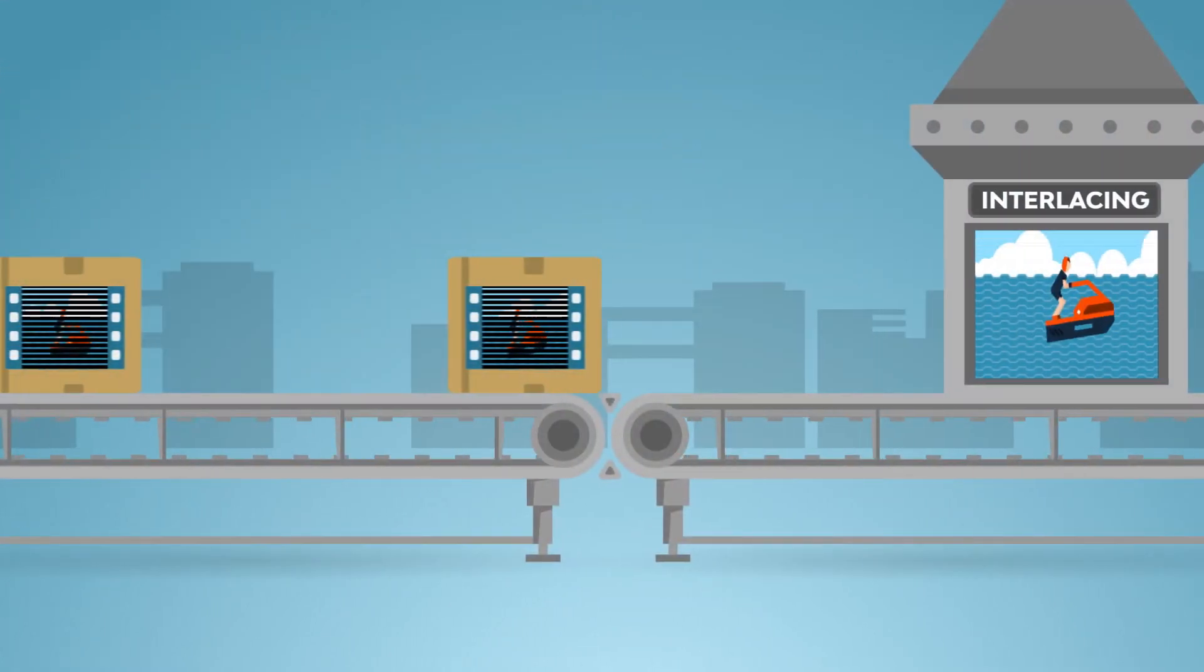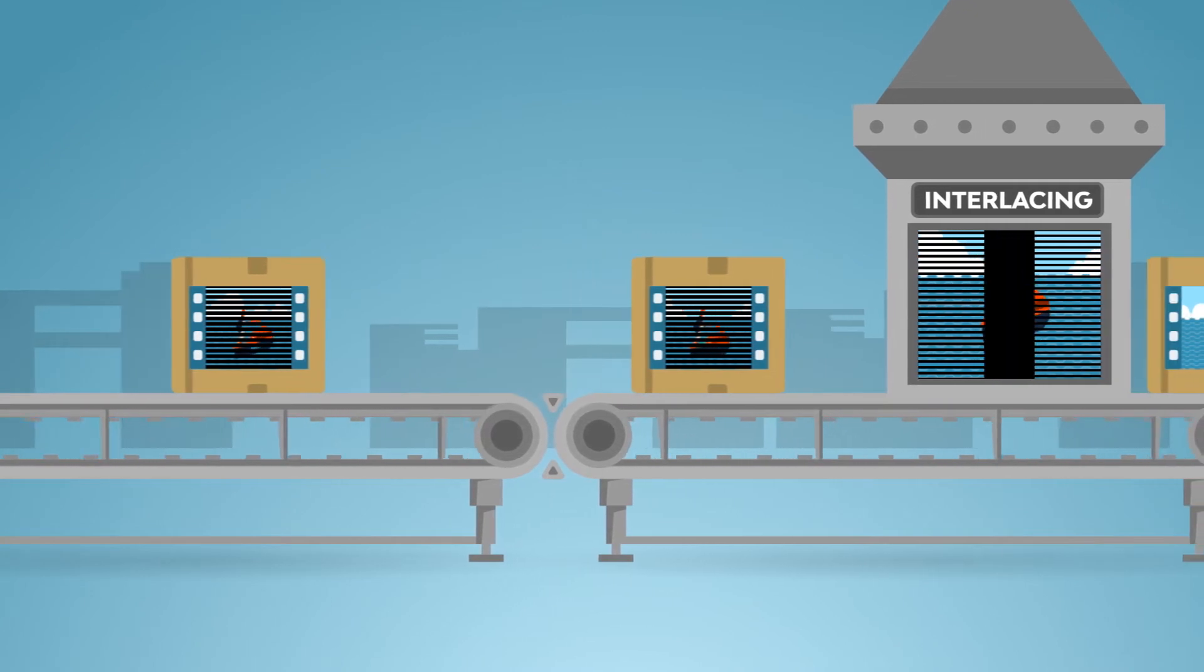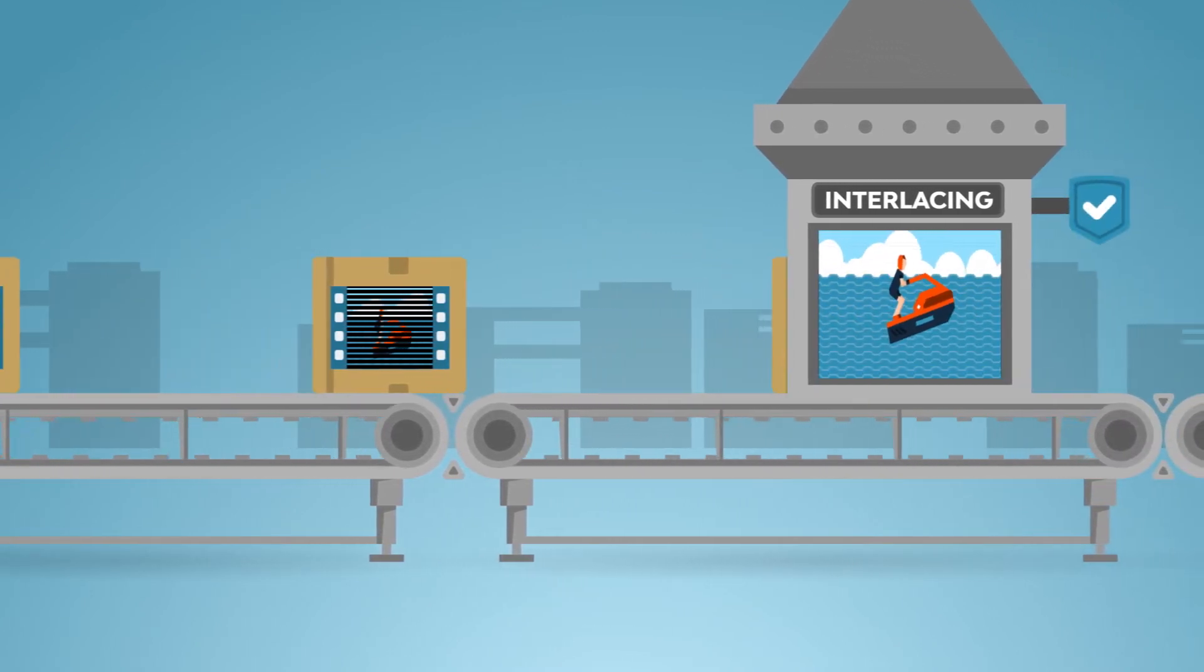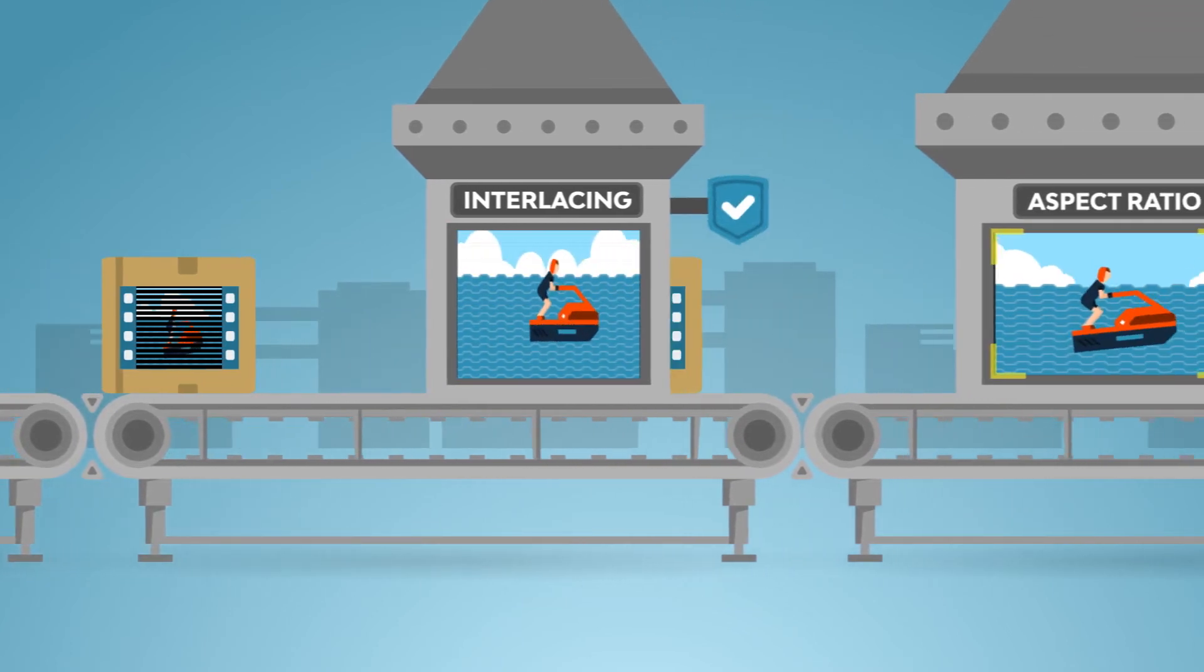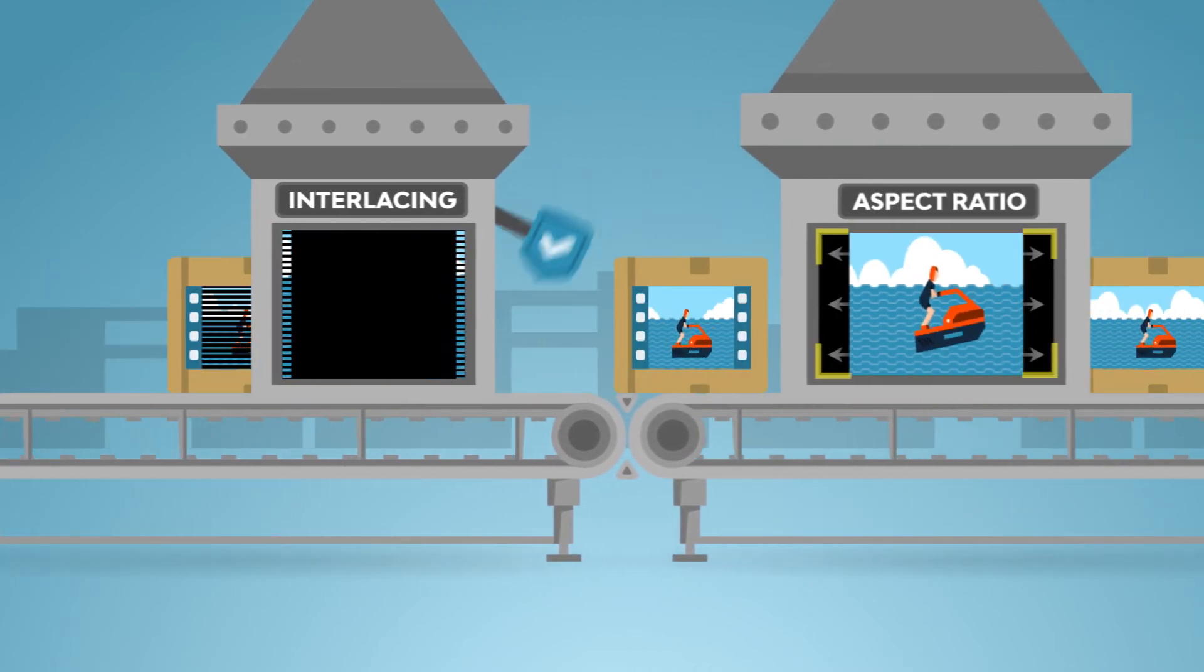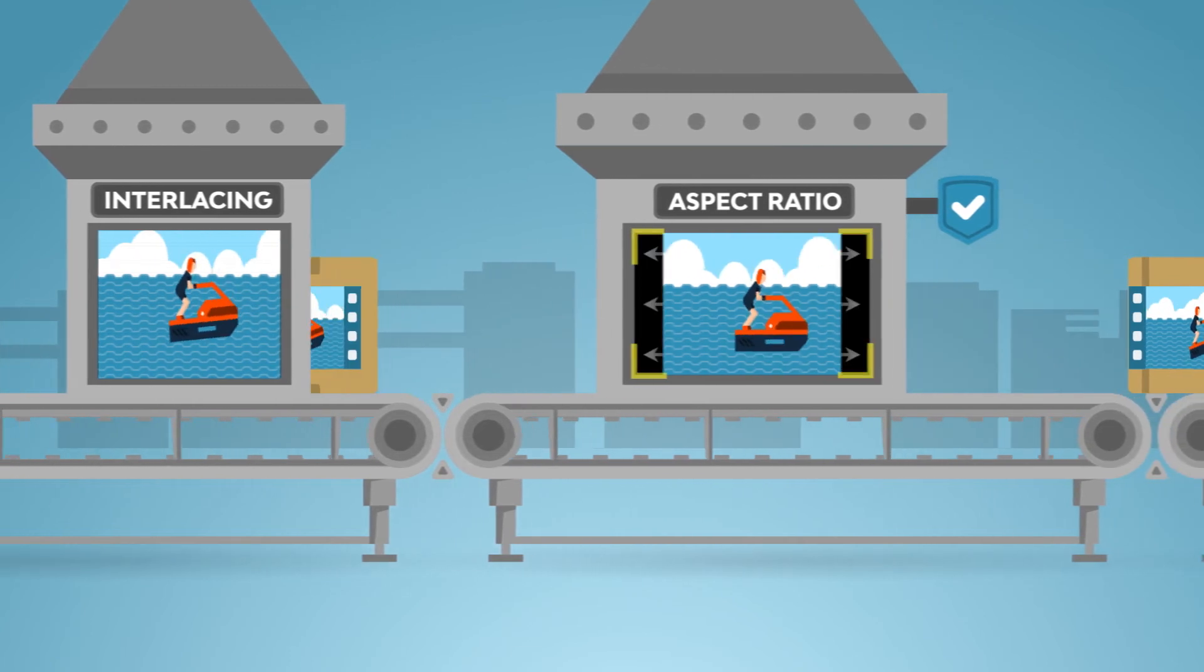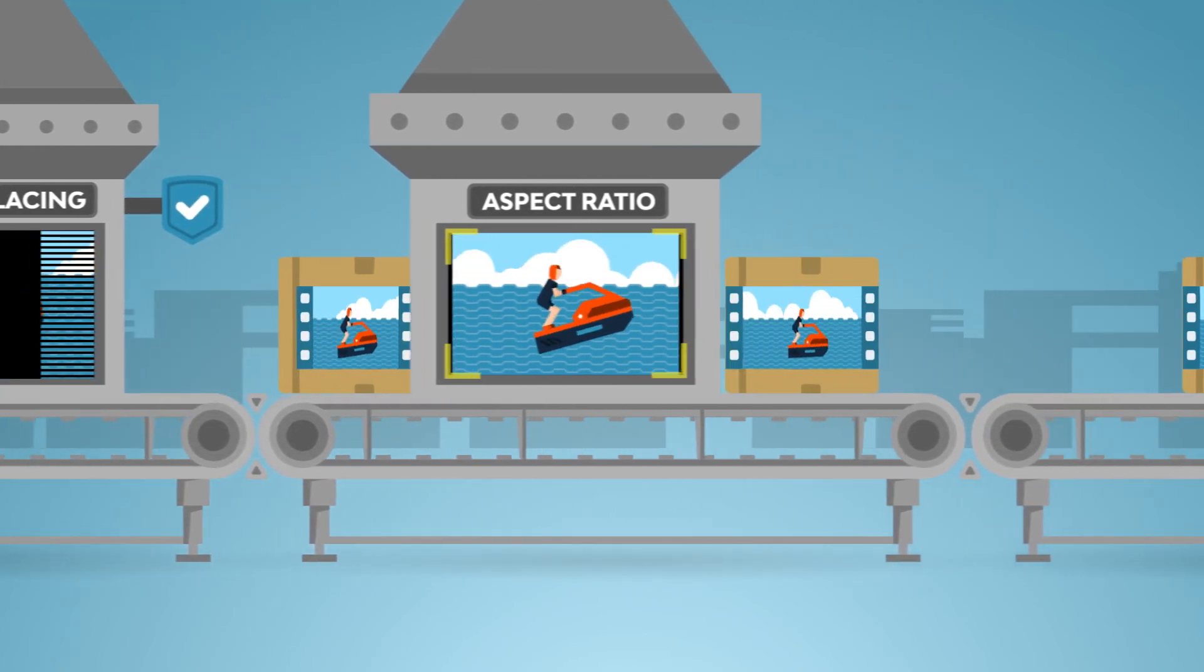Video signals also go through processing, with scaling done to ensure the video is as close to the source signal as possible while looking perfect on every display. This scaling accounts for resolution, aspect ratio, frame rate, color space, interlacing, and a variety of other things.